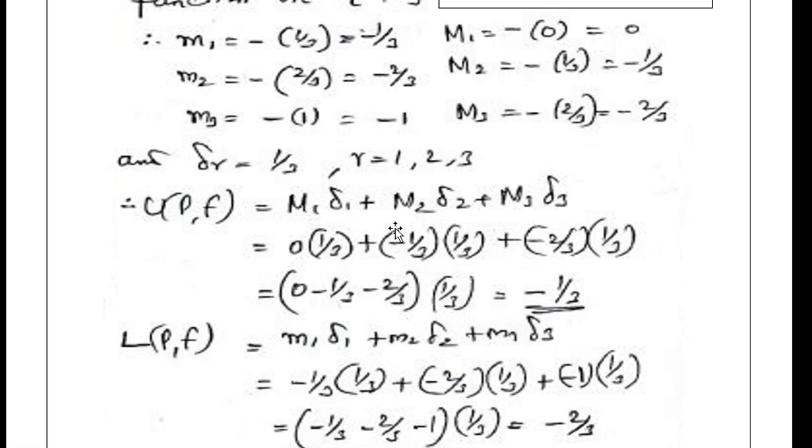The lower Darboux sum, or lower Riemann sum, equals m1·Δ1 + m2·Δ2 + m3·Δ3. Substituting: m1 = -1/3, m2 = -2/3, m3 = -1, and Δ1 = Δ2 = Δ3 = 1/3. Taking 1/3 as a common factor: (1/3)((-1/3) + (-2/3) + (-1)). Taking LCM gives -2, so the result is (1/3)(-2) = -2/3. Therefore, the lower Riemann sum is -2/3.